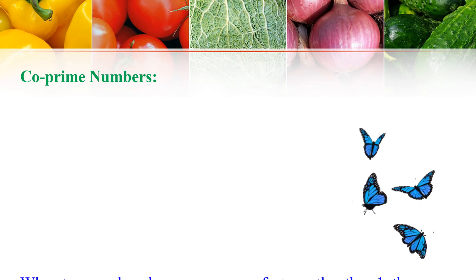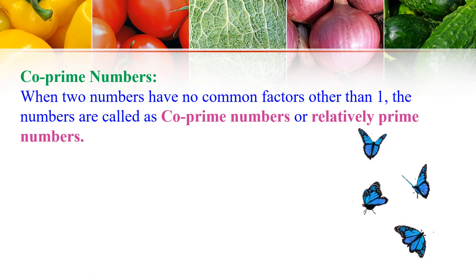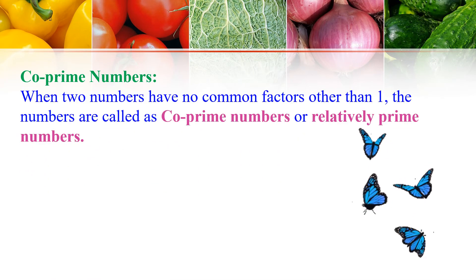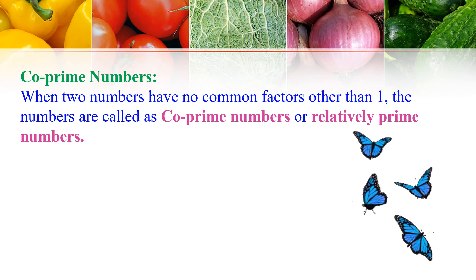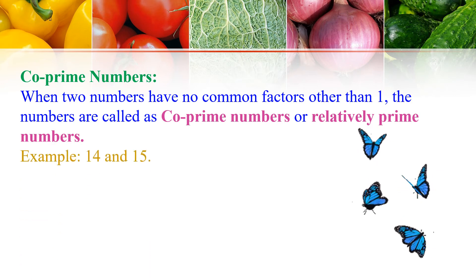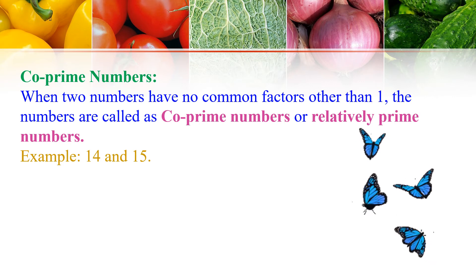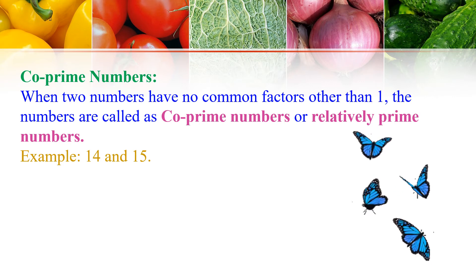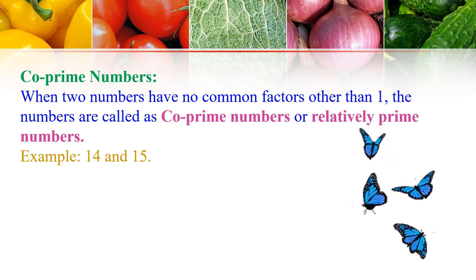Co-Prime Numbers: When two numbers have no common factors other than 1, they are called Co-Prime Numbers or Relatively Prime Numbers. For example, 14 and 15 — both numbers have only one common factor which is 1. Therefore, 14 and 15 are called Co-Prime Numbers.